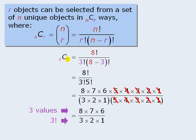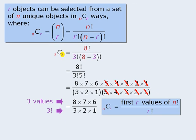So to generalize the role that r plays in calculating combinations, we can say that the value of n choose r is equal to the first r values of n factorial over r factorial.